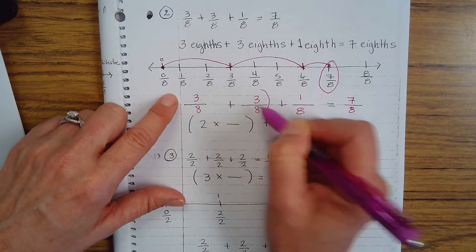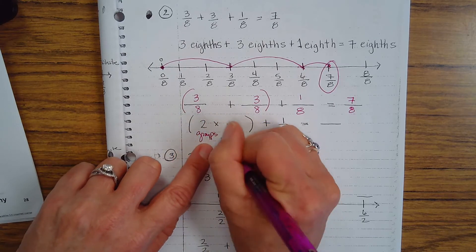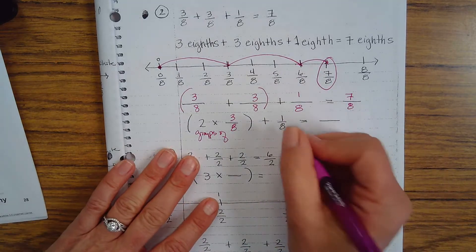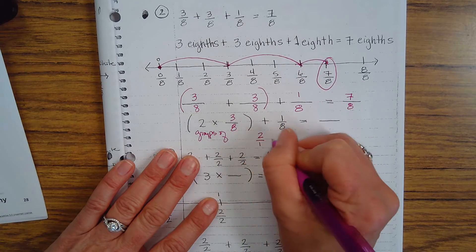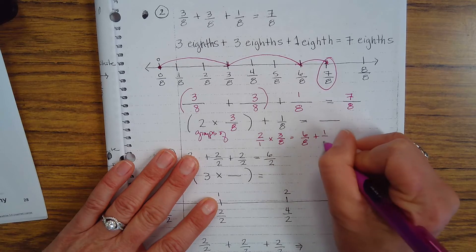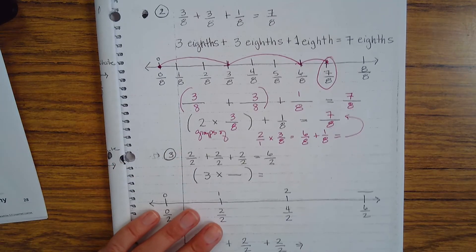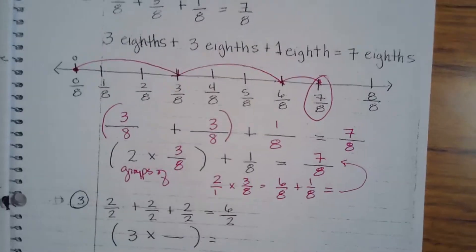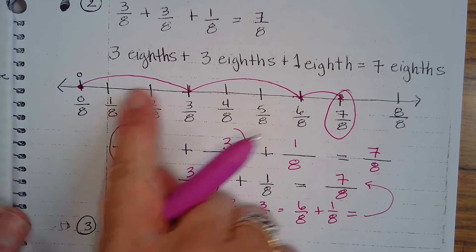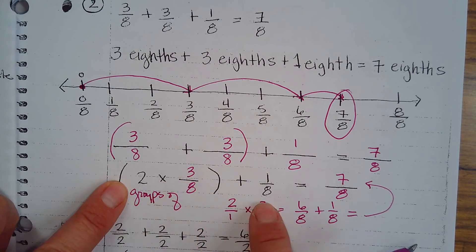I have two groups of three-eighths plus one-eighth, which gives us seven-eighths. We could also say two times three-eighths gives us six-eighths, plus one-eighth equals seven-eighths. It's just another way of looking at this using the number line — seeing that I have two groups of this, I can multiply that and then add more.